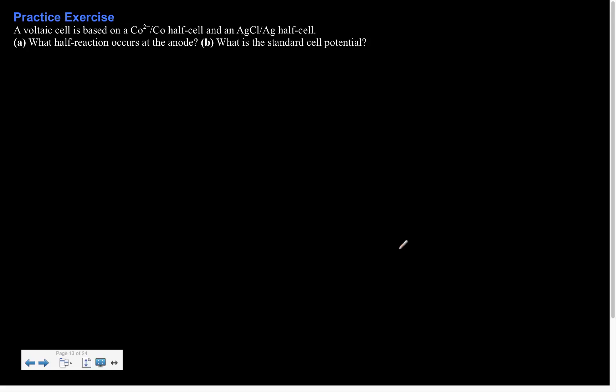So, practice problem. We have a voltaic cell is based on a cobalt, cobalt 2+ half cell, and a silver, silver ion half cell. So which reaction occurs at the anode, and what's the standard cell potential? So for fun, let's go ahead and doodle this out. So we know that we have one half cell and another half cell. We're going to have an electrode here. And note that the electrodes can participate in the reaction, or the electrodes can be inert.